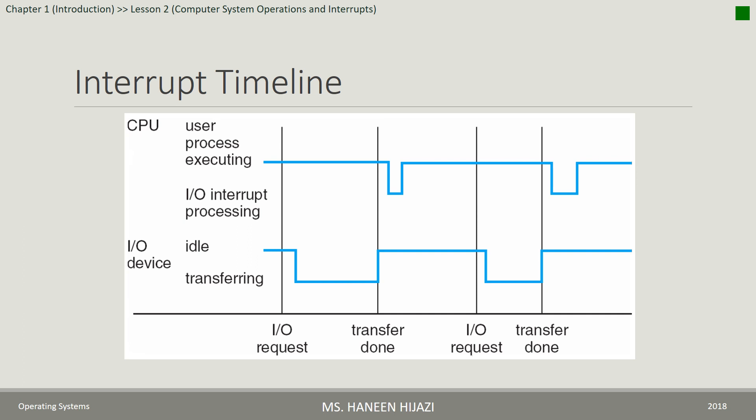بمجرد ما يوصل الـ Interrupt للـ CPU، بتوقف الـ CPU الـ User Process وبتخزن القيم الخاصة بالـ Process الموجودة في الـ Registers والـ Address of the Next Instruction الموجود في الـ Program Counter، وبتنتقل لتعمل Processing للـ Input-Output Interrupt. بمعنى آخر، بتنفذ الـ ISR الخاص بهذاك الـ Interrupt. بس تتخلص، الـ CPU بترجع وتحمل القيم الـ Registers والـ Program Counter الخاصة بالـ Process وبتكمل تنفيذها من محل ما وقفت.